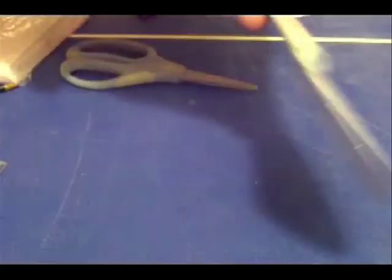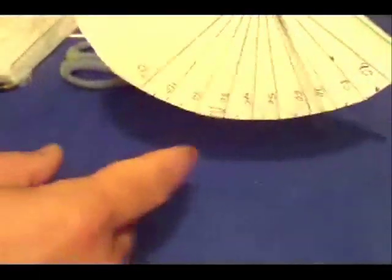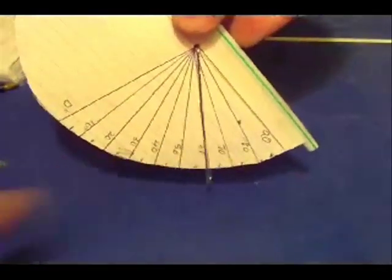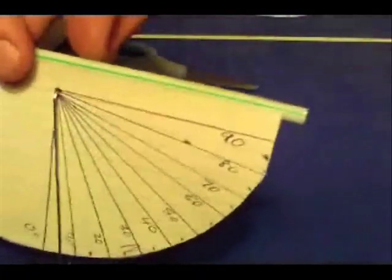And you've got a sextant. Notice how it swings - the little metal thing swings freely, always pointing down because of gravity. And there you go. Now you're ready to measure altitude angles.